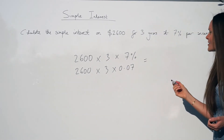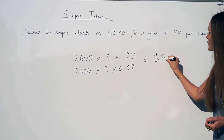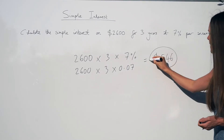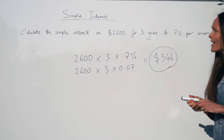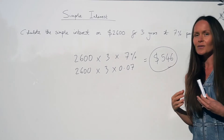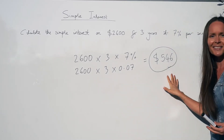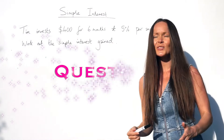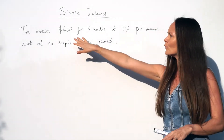Both methods will give you the same answer. When you do that you should get five hundred and forty six dollars, which is the amount of simple interest that was made.